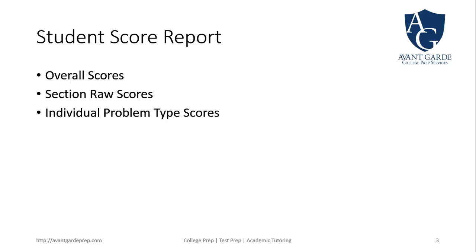In your student score report you'll have overall scores and section raw scores, broken down by math, reading, and written language, so you can better understand your progress in those areas. You'll also be able to see the individual types of problems — for instance, in the Heart of Algebra, you'll see how well you're progressing with algebraic expressions, linear equations, and function problems.